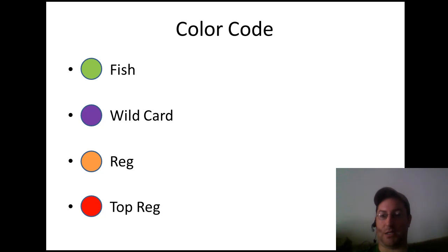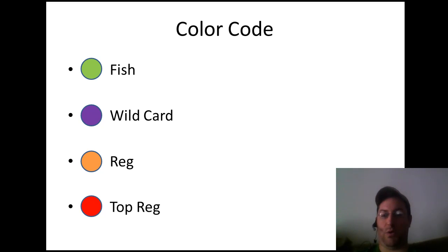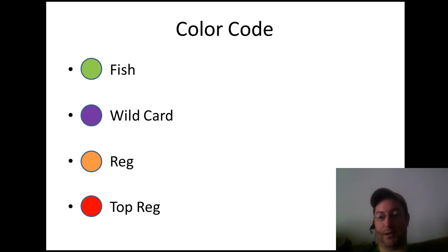When I was playing a ton of tables I put together a more elaborate color coding system based on specific player tendencies. Here's something quick and easy to put into your game: label the bad players — the fishy players — as green. These are the guys that are going to be spewing chips all over the place. Purple is the wild card — a player that isn't a winning or losing player, has some idea what's going on, but probably has leaks in their game you want to identify. Orange is a reg — a good solid winning player — and dark orange or red is a top reg, the top players in your games with the highest win rates, capable of more elaborate plays.